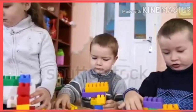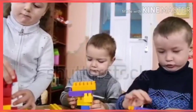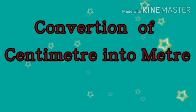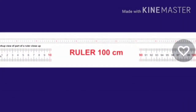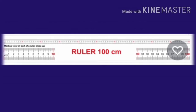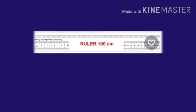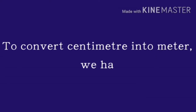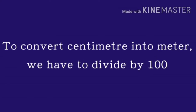Hi children, welcome to Maths online class. In today's class, let us learn to convert centimeter into meter. See this meter scale. This meter scale is made up of 100 centimeter. So, 1 meter is 100 centimeter. To convert centimeter into meter, we have to divide by 100.